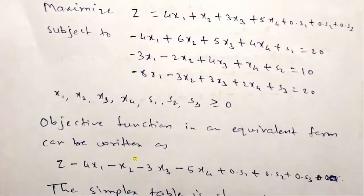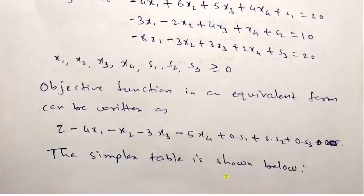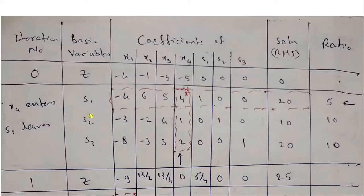First we will write down the objective function in equivalent form as z minus 4x1 minus x2 minus 3x3 minus 5x4 plus 0s1 plus 0s2 plus 0s3 equal to 0. The simplex table is then iteration number, basic variables, coefficients, RHS solutions and ratios. Iteration number 0, in z row we will write down the coefficients in equivalent form: minus 4, minus 1, minus 3, minus 5. Basic variables are s1, s2, s3.